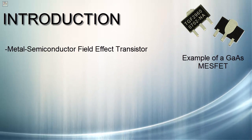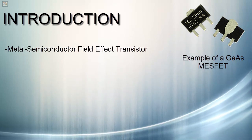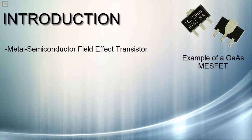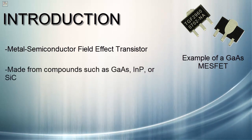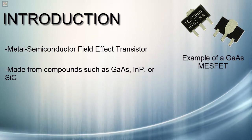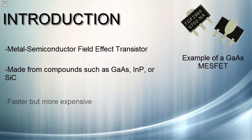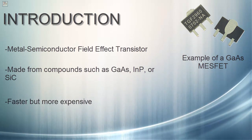Compared to JFETs or MOSFETs which are silicon-based, MESFET is constructed out of compounds such as gallium arsenide, indium phosphide, or silicon carbide. MESFETs are also faster but more expensive.